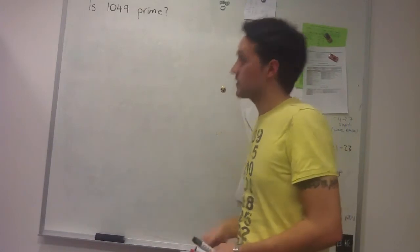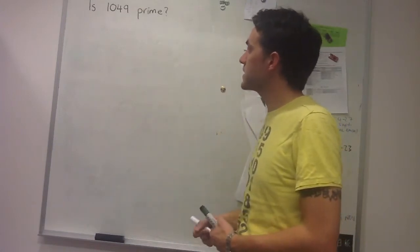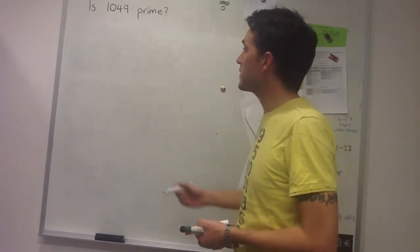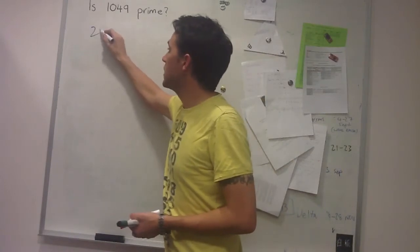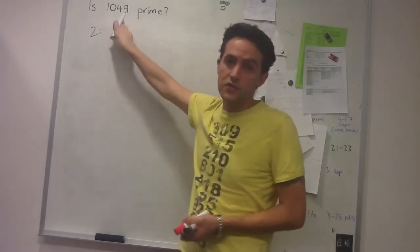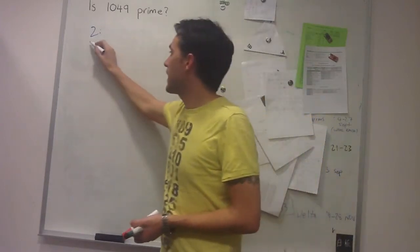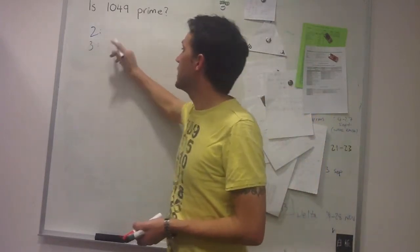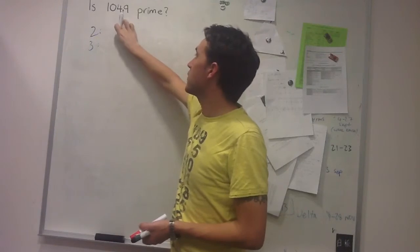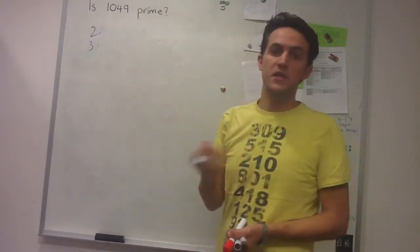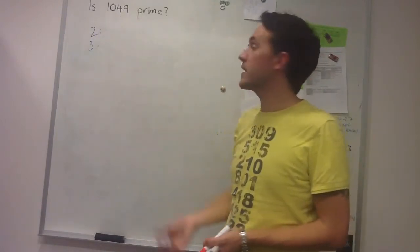The first thing we can do is use our divisibility tests. We can check for 2 - obviously it's not divisible by 2 because it doesn't end in an even number. We can check 3. We can see that 1 plus 4 plus 9 gives us 14, which isn't divisible by 3, so 3 is not a factor.